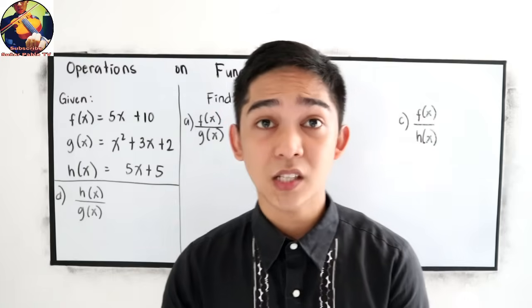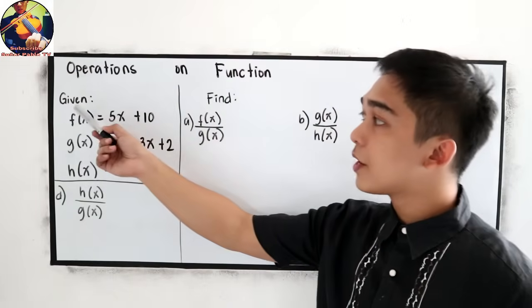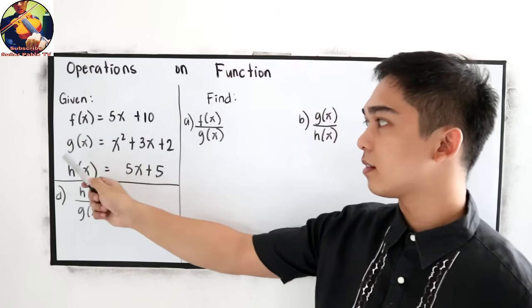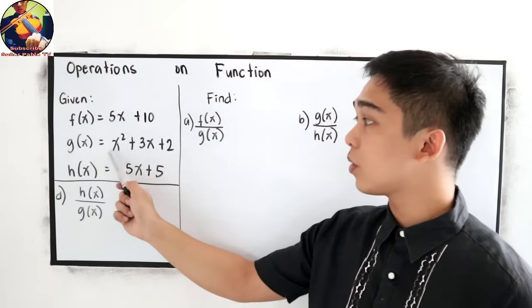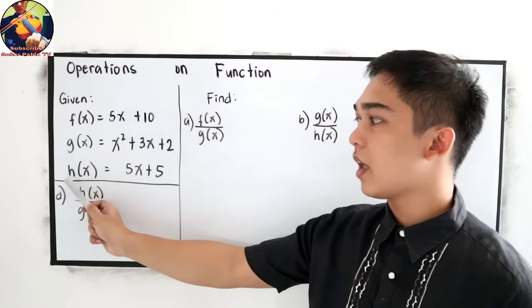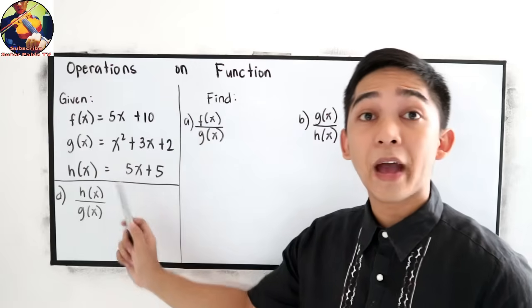Let's have this example. Given f of x is equal to 5x plus 10, g of x is equal to x squared plus 3x plus 2, and h of x is equal to 5x plus 5.